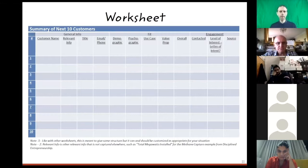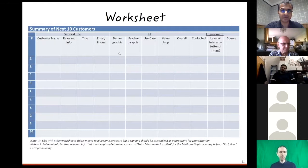Here's a worksheet that can be used for this. We have a table with 10 rows. You've got a customer name, title of the person, their contact details, demographic and psychographic fish. What you can see here is that the middle set of questions are all about the fish. In the middle of the columns here, you can see the fish in terms of demographics, the psychographics, the use case that they will use your product for, the value proposition and overall.